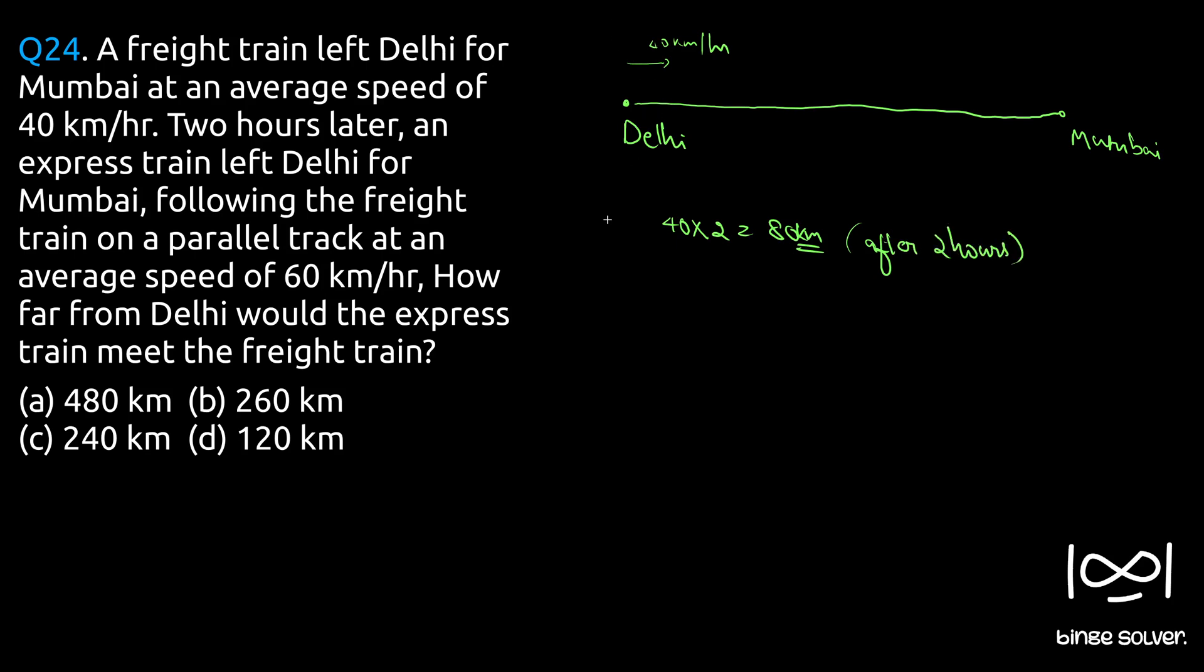So after two hours the freight train reached 80 km. So from this distance it is traveling at 40 km per hour. And now a new train is starting from Delhi and going in this direction at 60 km per hour. How far from Delhi would the express train meet the freight train is the question.